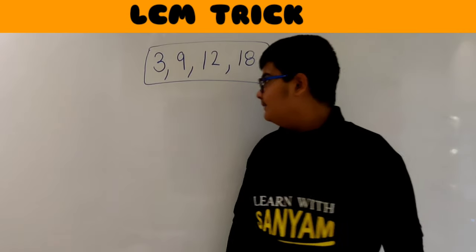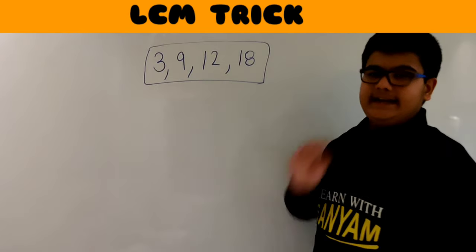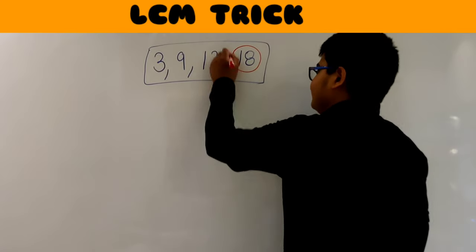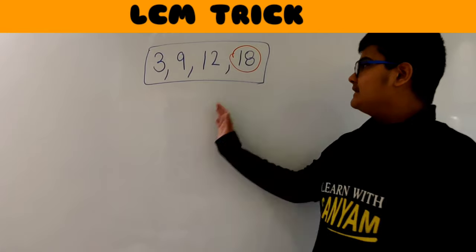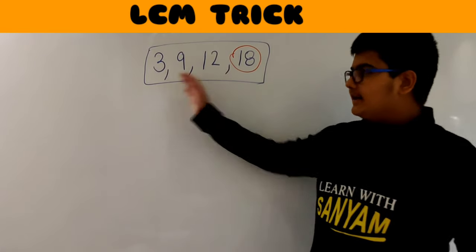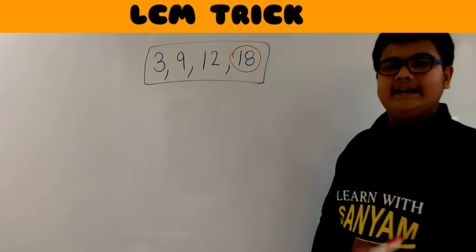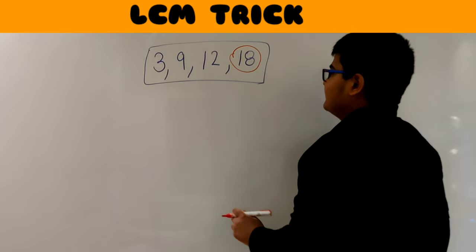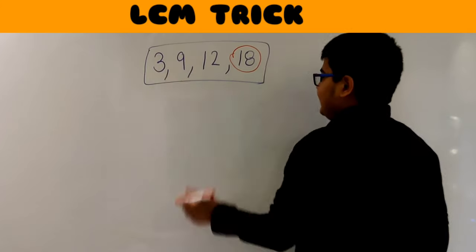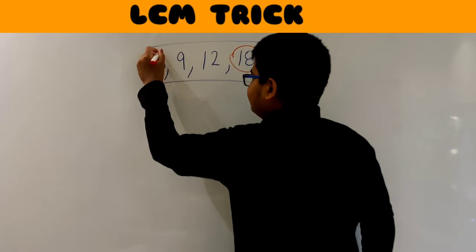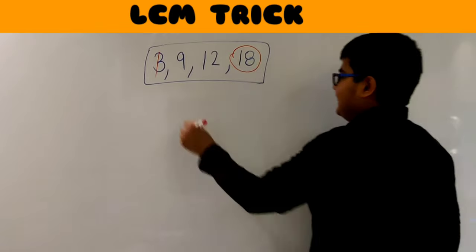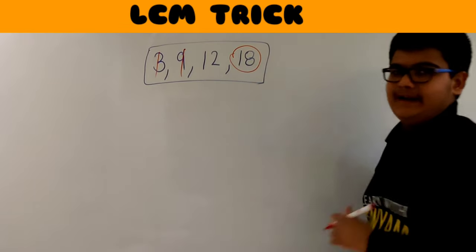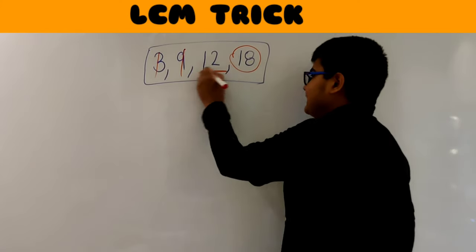Now let's find the LCM of four numbers using the same trick. Our numbers are 3, 9, 12, and 18. The largest number is 18. Now check whether all the other numbers are completely divisible by 18. 3 is completely divisible by 18 because 3 × 6 = 18, so that's done. 9 is also divisible by 18, but 12 is not divisible by 18, so 12 is still left.